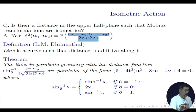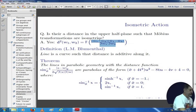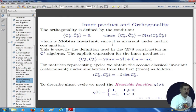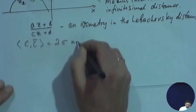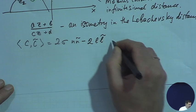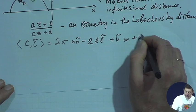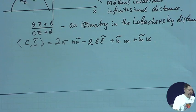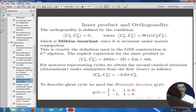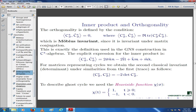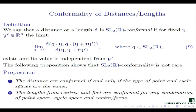Fortunately it is a rather easy calculation and it will show usage of previous notions. Let us come back to the definition of the inner product. The inner product of two cycles C and C-tilde will be 2σn·ñ minus 2l·l̃ plus k̃m plus m̃k.